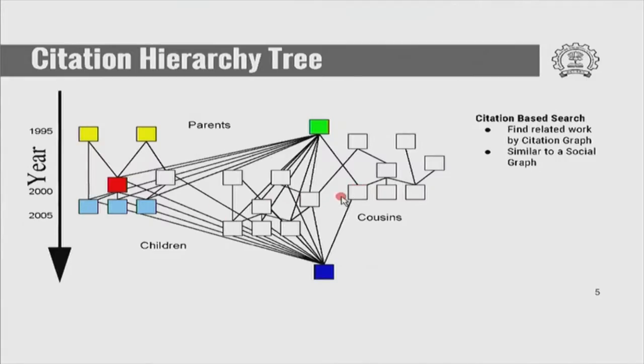What is a citation? Suppose in a journal article you use some other article and say that somebody has done this or they have not done this. That article becomes related to your article in some way — there is a commonality. That is why it is useful to see the whole citation and literature as a family diagram. There are parents, children, and cousins.